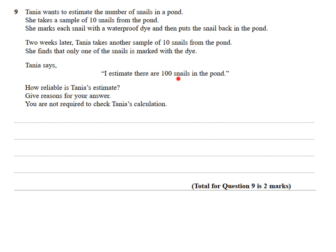Tanya says, 'I estimate there are 100 snails in the pond.' She only marked 10, and she found that one of them was tagged the second time she caught 10. She's estimating 10 times more than this. This looks like a very small sample to be taken. How reliable is Tanya's estimate? You are not required to check Tanya's calculation. We need to comment on the reliability, so we need to either say that Tanya's estimate is reliable or that it is not reliable. I'm going to say unreliable. The main thing I'm thinking about is that this sample size is too small, and the other one would be that two weeks is too long. In two weeks, snails might have left the pond—the population might have changed in two weeks' time.